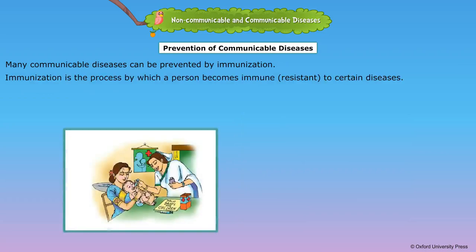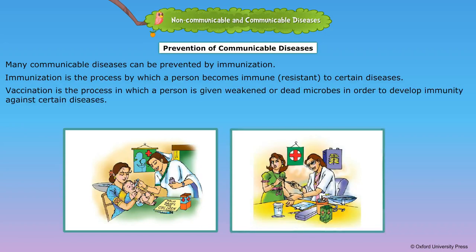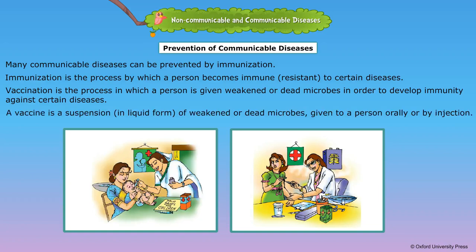Immunization is the process by which a person becomes immune, or resistant, to certain diseases. Vaccination is the process in which a person is given weakened or dead microbes in order to develop immunity against certain diseases. A vaccine is a suspension in liquid form of weakened or dead microbes given to a person orally or by injection.